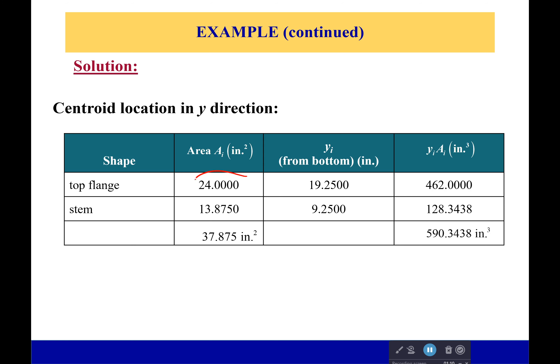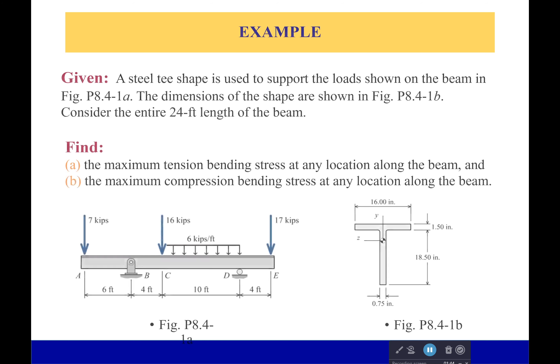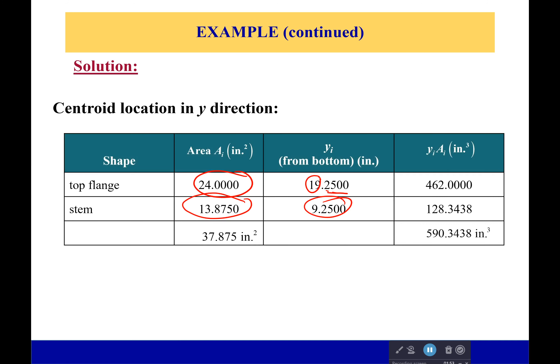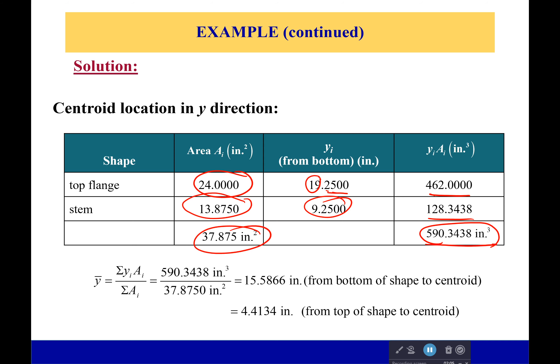Looking at the top flange, we'll have an area of 24 square inches, and the stem will have an area of 13.875 square inches. The distance to their centroid is going to be simply half the height for the stem. For the top flange, it's going to be half its height, which is only half an inch, plus the 19 inches from the previous one. Wait, let me make sure I did everything right. I was a bit off—this is 18.5 inches, so it would be 18.5 plus 0.75. We then multiply them together as we've done so many times before, and we add them to get the total here and the sum here so we can plug it into our centroid calculation, which says that the centroid is 15.5866 inches from the bottom or 4.4134 inches from the top. You can use either one as long as you're consistent.